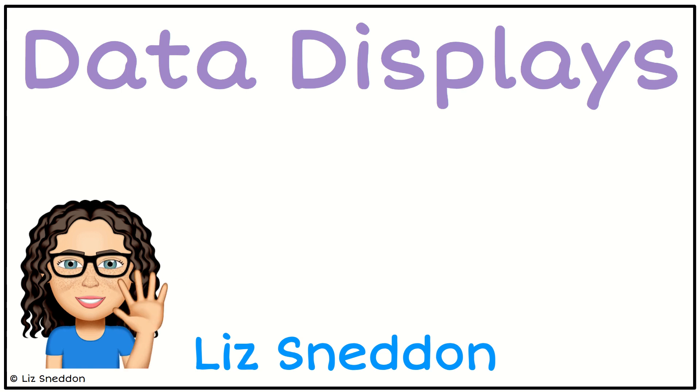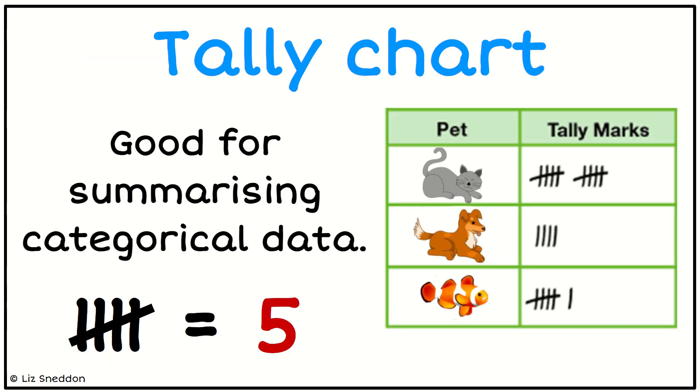Hi, it's Liz Sneddon. Let's have a look at some different data displays. One of them is a good old tally chart. This is when we're able to summarize categorical data. You can see there on the little table summarizing the different kinds of pets and how many people had each type of pet.